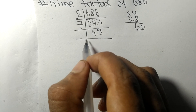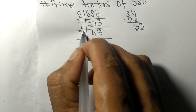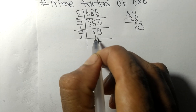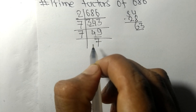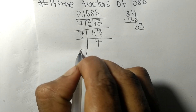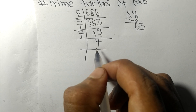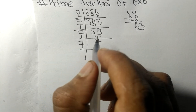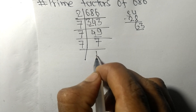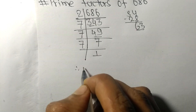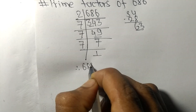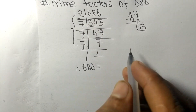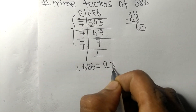49 is exactly divisible by 7 — 7 times 7 is 49. So now we got 7, which is exactly divisible by 7 itself, and we get 1.